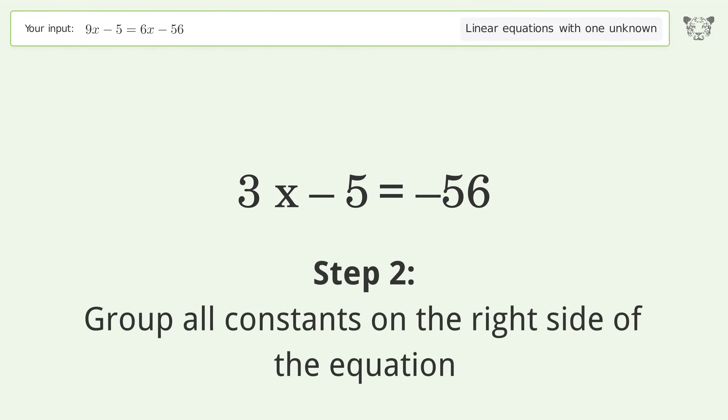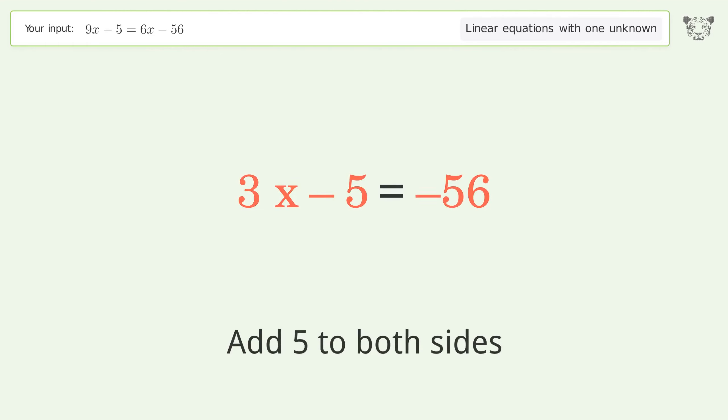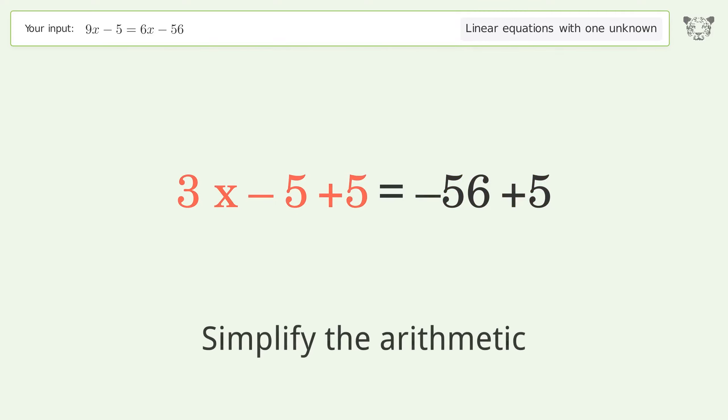Group all constants on the right side of the equation. Add 5 to both sides. Simplify the arithmetic.